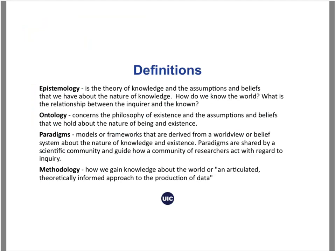I wanted to start out with some definitions. This is really useful to understanding and discerning qualitative from quantitative, which was the focus of the last unit. When we talk about epistemology, this is the theory of knowledge — the assumptions and beliefs that we have about the nature of knowledge. How do we know things? How do we know the world? What is the relationship between the knower and the known? Ontology is different from epistemology in that it has concerns about the philosophy of existence and the assumptions and beliefs that we hold about the nature of being and existence.